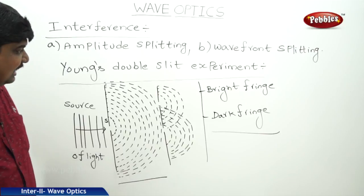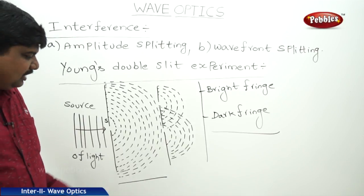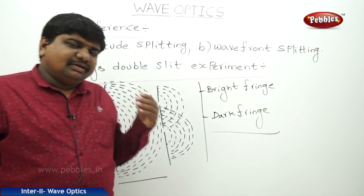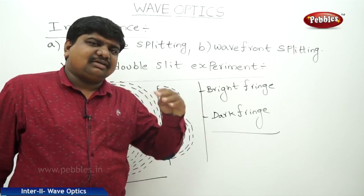By using this Young's double slit experiment, we can find out the fringe width and other related factors.